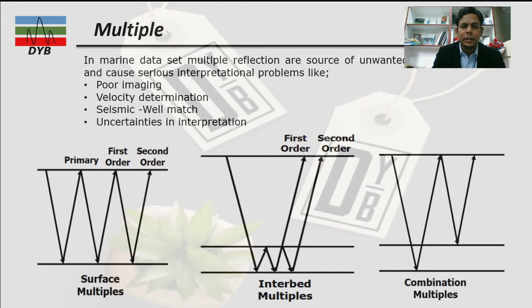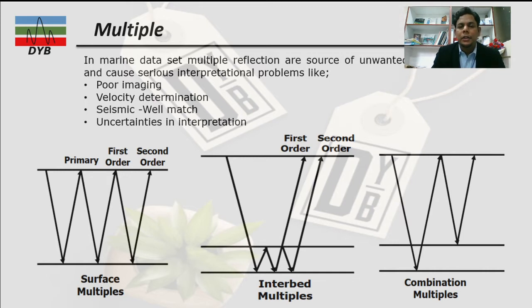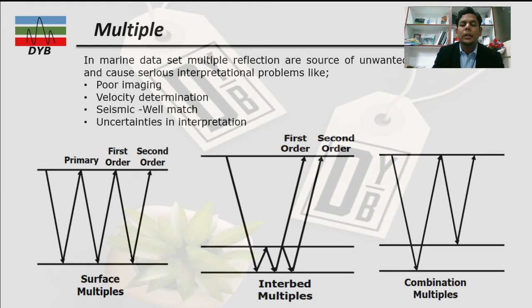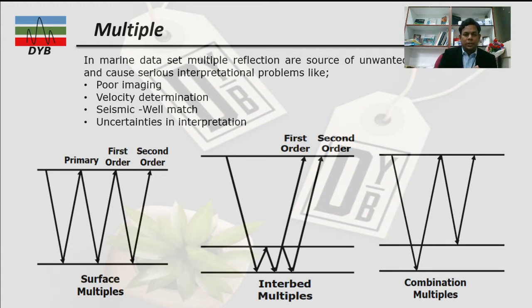In marine seismic data there are a number of multiples. This is a very challenging part because it causes seismic interpretational problems, and sometimes causes over-imaging — when you've done the seismic imaging you will see events doubled, like at one second, then at two seconds a similar event appears. It creates problems with velocity determination because multiples are similar to the primary but at higher velocity, and with well-to-seismic tie the multiples don't match your well logs, introducing uncertainty in seismic interpretation.